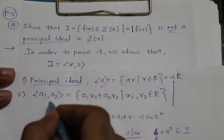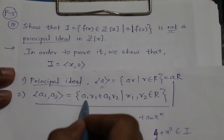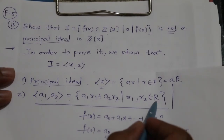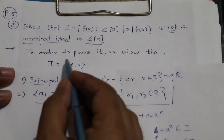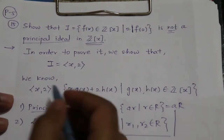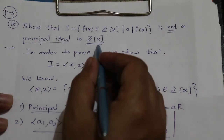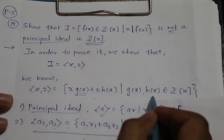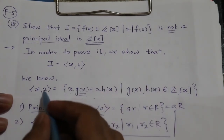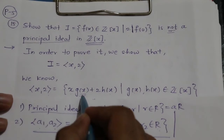Before proving this, recall that the ideal generated by a₁ and a₂ is the set of all a₁r₁ + a₂r₂ such that r₁, r₂ belong to our ring. In our case the ring is ℤ[x], so the ideal generated by x and 2 consists of elements of the form x·g(x) + 2·h(x), where g(x) and h(x) are polynomials in ℤ[x].